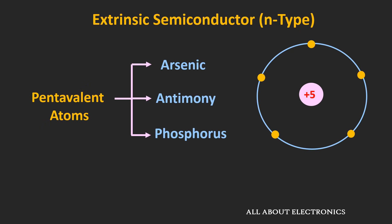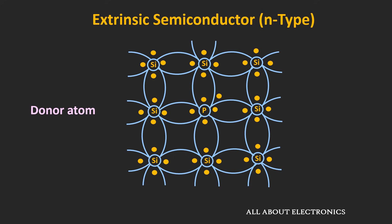Similarly, by adding pentavalent impurities an n-type semiconductor can be formed. Pentavalent atoms have five electrons in the outermost orbit; arsenic, antimony, and phosphorus are a few examples. When a pentavalent atom is added to silicon, four of its five electrons are shared with neighboring atoms, but one electron remains in the valence orbit — this electron acts as a free electron and can move around in the crystal structure. Therefore each pentavalent atom creates one free electron, and by adding pentavalent impurities we can create an excessive number of electrons in the crystal structure.